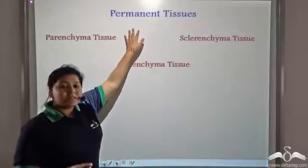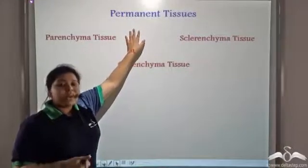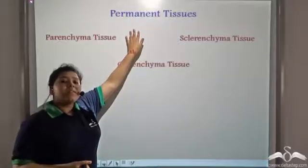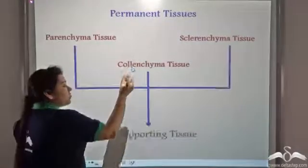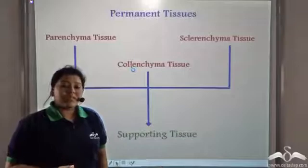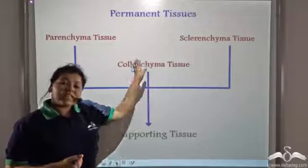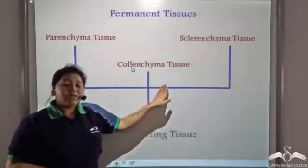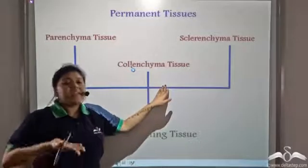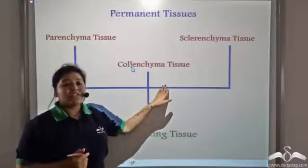Tissues that have lost the ability to divide and grow any further form the supporting tissue of the plant. So all these three tissues form a plant and these three tissues allow the plant to have this erect and rigid nature.